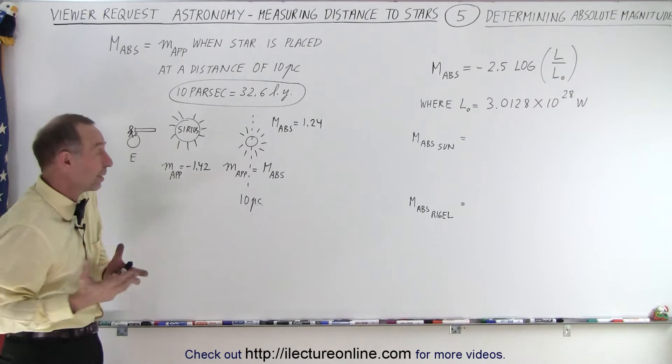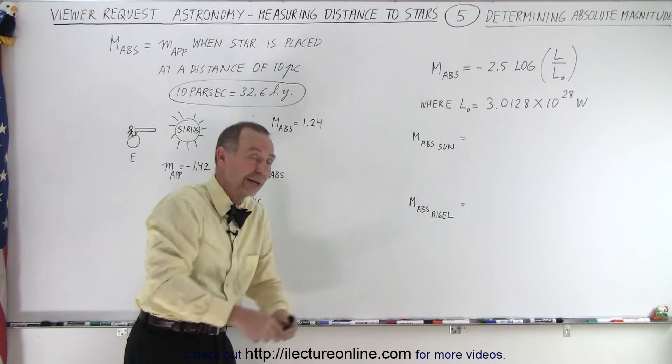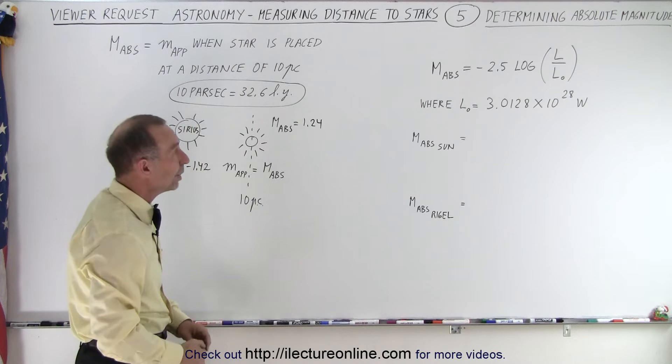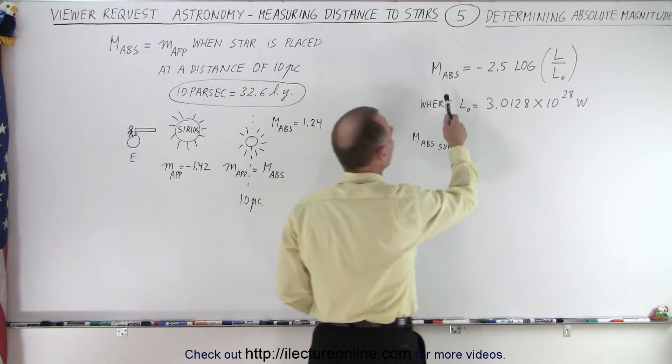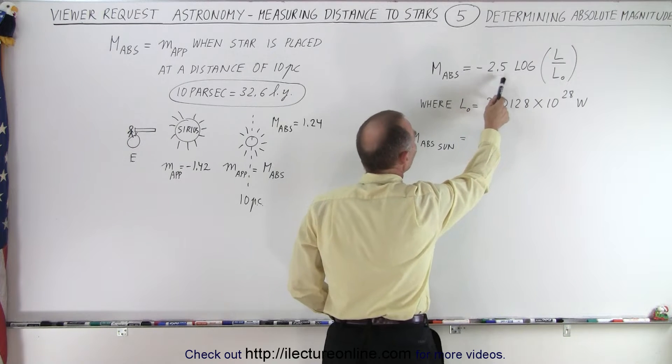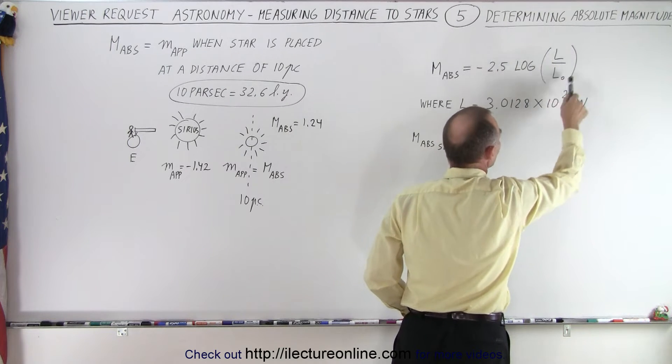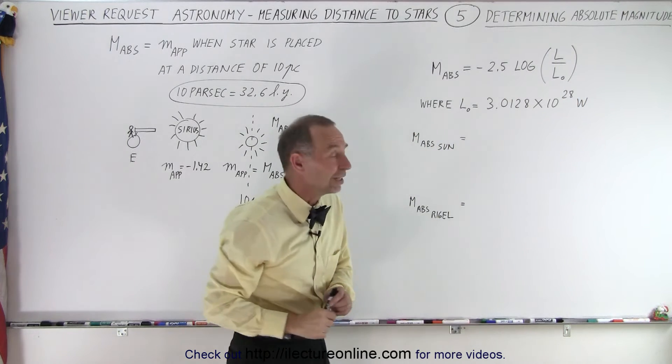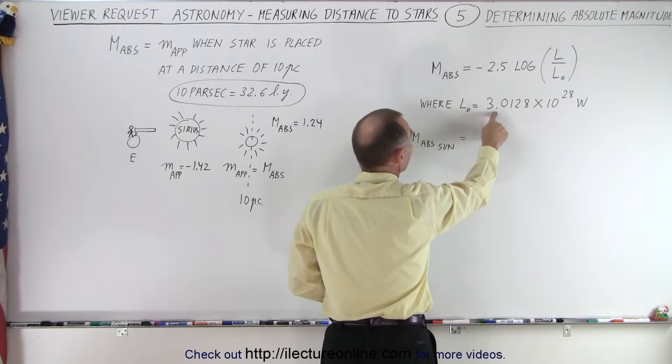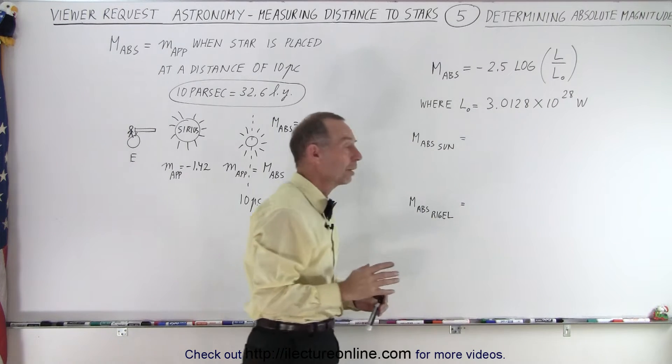Now, how do we calculate the absolute magnitude? Because essentially, we can't pick up a star and move it 10 parsecs away. That's impossible, of course. Well, we have an equation. The equation reads that the absolute magnitude is equal to minus 2.5 times the log of the ratio of the luminosity of the star divided by a base luminosity. That base luminosity is 3.0128 times 10 to the 28 watts.